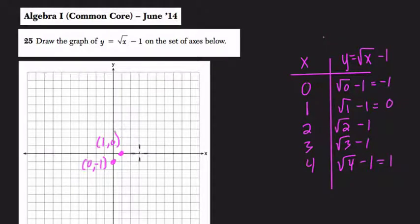So we get this point (1, 2, 3, 4). Oops. (4, 1) here. So you can see that this graph, when you plot the point (4, 1), seems to have this curvature shape to it.